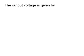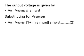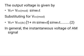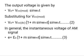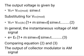The output voltage is given by V0 = VCC_mod · sin(ωc·t). Substituting for VCC_mod, we get: V0 = VCC_DC · (1 + M·sin(ωm·t)) · sin(ωc·t) — equation 2. Comparing equation 2 and equation 3, it can be stated that the output of the collector modulator is an AM signal.